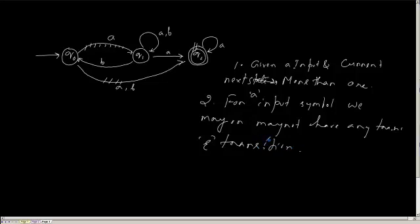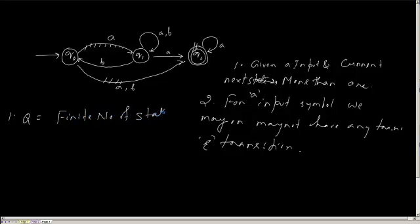Now let us discuss something about 2 to the power Q, which was being asked about. Let Q be the finite number of states. Then 2 to the power Q is called the power set of Q.